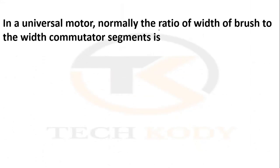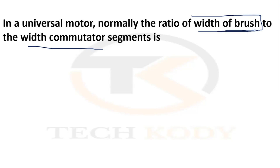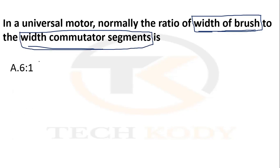In the universal motor, the ratio of the width of the brush to the width of the commutator segment — they ask for this ratio. The options are 6:1, 4:1, 2:1, and 1:1. The width of the brush to the commutator segment is 2:1.